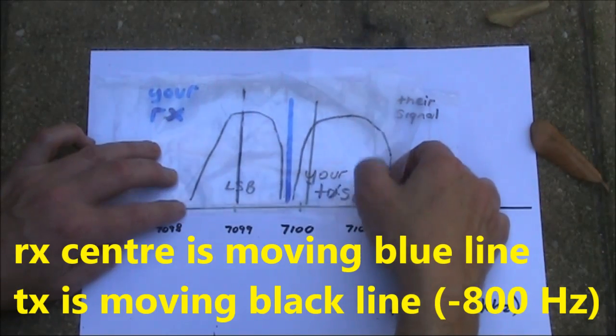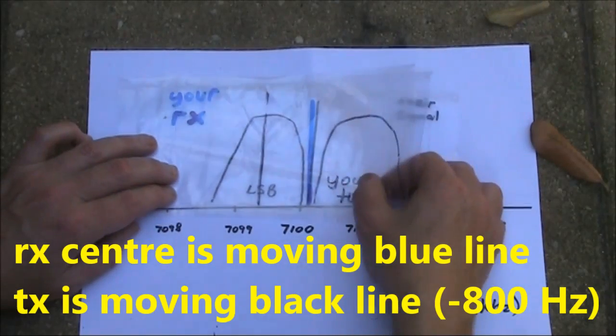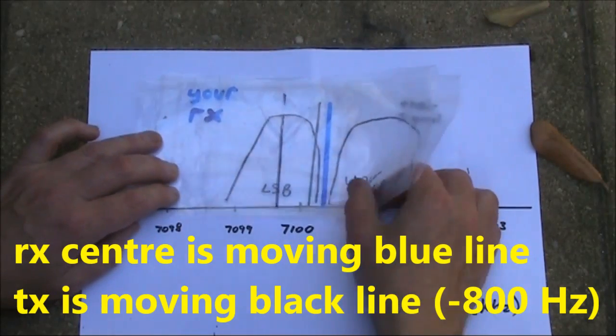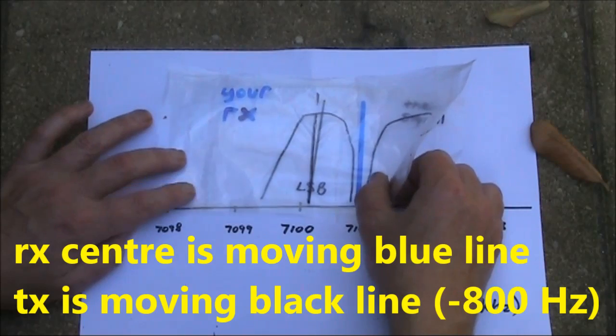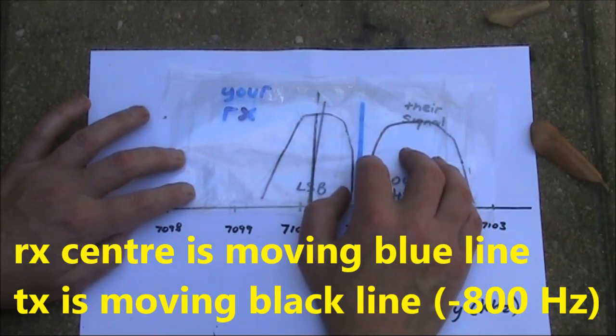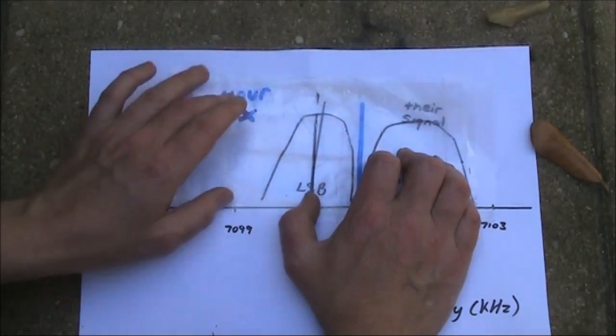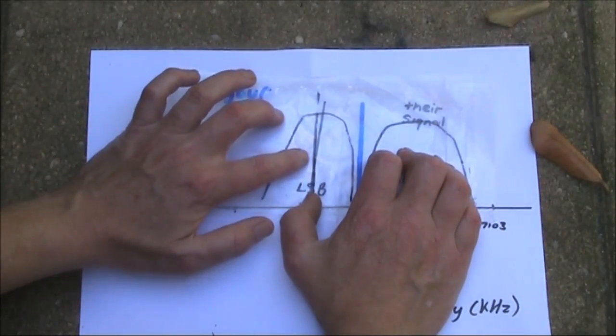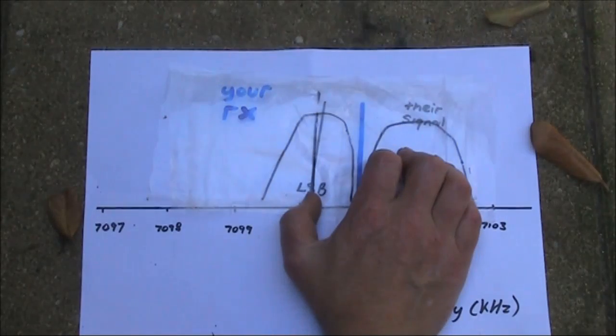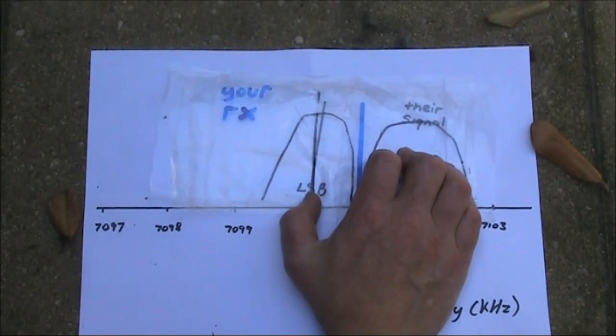You don't want to be transmitting there, but then when you just pass through zero beat, and then again out the other side, so that your received local oscillator is 800 Hz above their transmitted frequency, but your transmitted signal or transmitted frequency is exactly on theirs, which is where they'll be receiving. So that's where you want it.